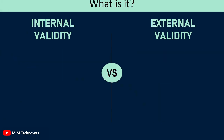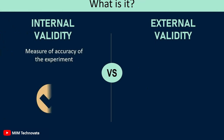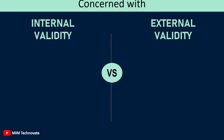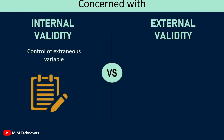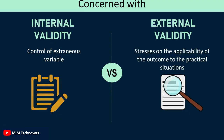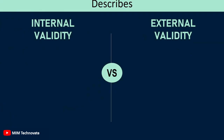What is it? Internal validity is a measure of accuracy of the experiment, while external validity checks whether the causal relationship discovered in the experiment can be generalized or not. Internal validity is concerned with control of extraneous variables, whereas external validity stresses on the applicability of the outcome to practical situations.